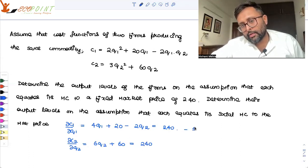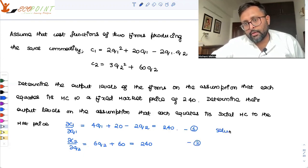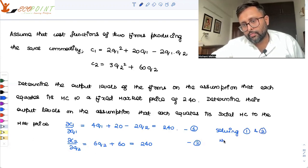This is equation 1. This is equation 2. Solving 1 and 2, we get Q1 as 70 and Q2 as 30.